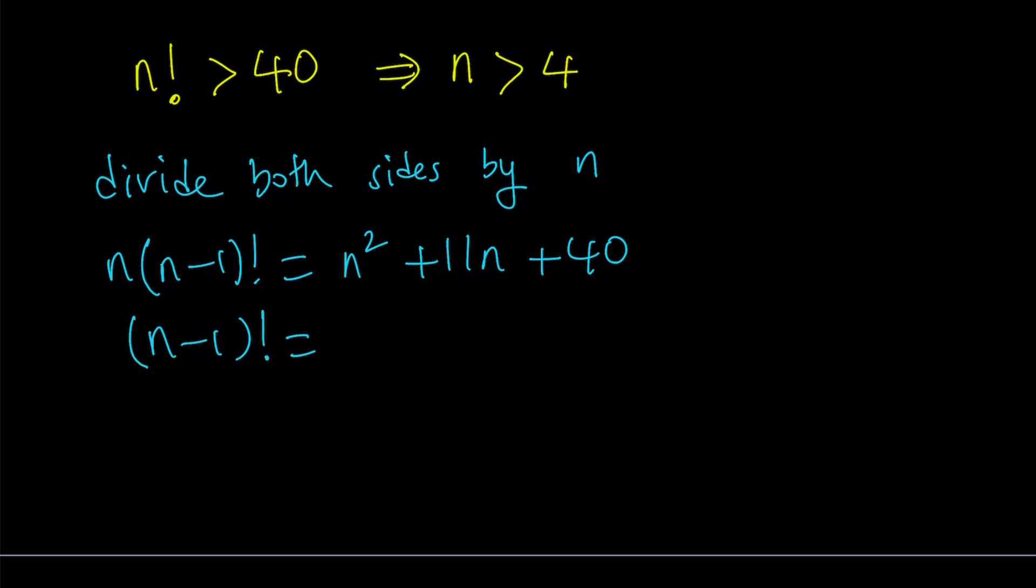n squared divided by n is n. This is going to give me 11. The constant term is going to be 40 divided by n. Now I've noticed that everything here is an integer. How about 40 over n? That's an integer too. This must be an integer. Therefore, n divides 40.